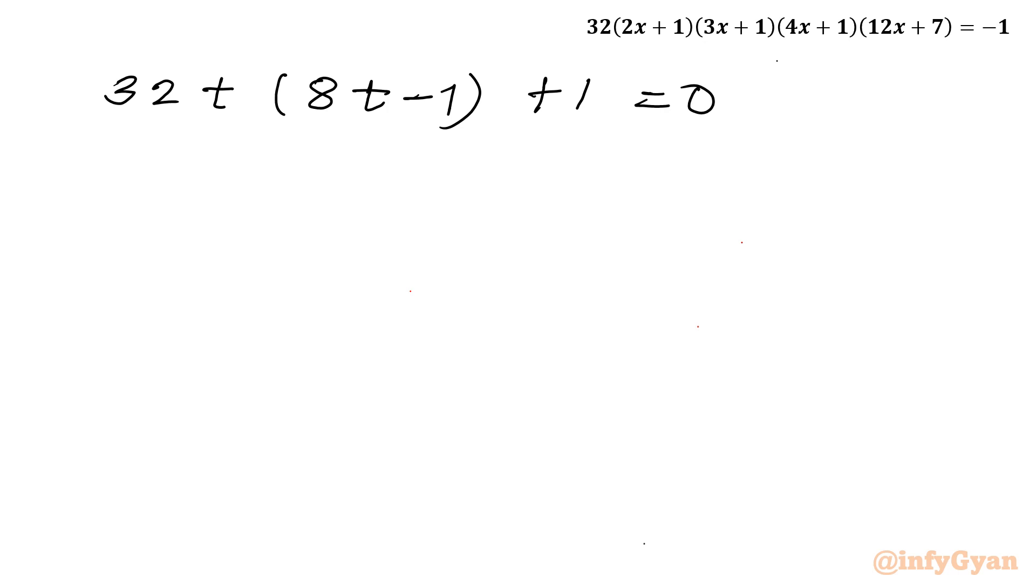Let us solve this quadratic equation. Let us expand first. 32 times 8 gives 256t squared. 32 times minus 1 gives minus 32t. And then we will be writing plus 1 equal to 0.